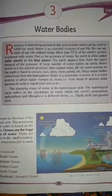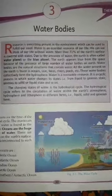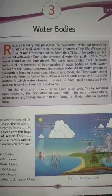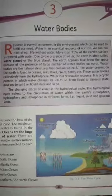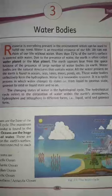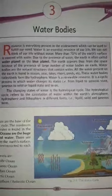A body of water or water body is any significant accumulation of water on the earth's surface. The earth is often called the watery planet because 71 percent of its surface is covered nearly with water. The term often refers to oceans, seas and lakes, rivers, streams, canals and other geographical features where water moves from one place to another are also considered bodies of water.